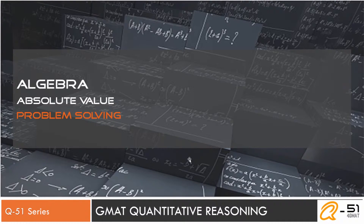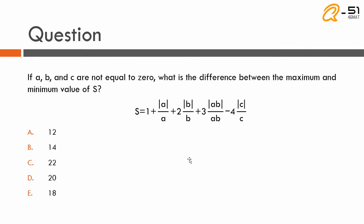This question tests concepts in absolute value; it is a problem solving question. A, B, C are not equal to 0. What is the difference between the maximum and minimum value of S? S is defined as follows: S equals 1 plus modulus of A over A, plus 2 times modulus of B over B, plus 3 times modulus of AB over AB, minus 4 times modulus of C over C.